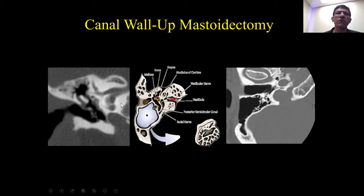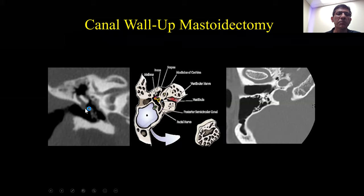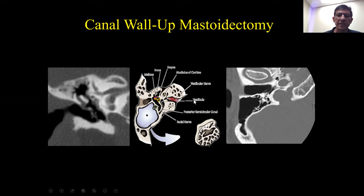The classic procedure performed for a cholesteatoma is referred to as a canal wall up mastoidectomy. This is usually performed for early cholesteatomas. Here's a small pathologically proven cholesteatoma that extended superiorly into Prussak's space. In a canal wall up mastoidectomy, we can see a classic mastoidectomy defect, but notice how the posterior wall of the external auditory canal is intact — otherwise known as 'up.'